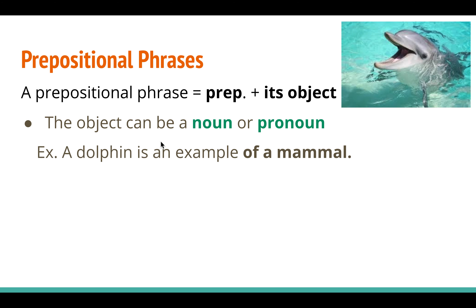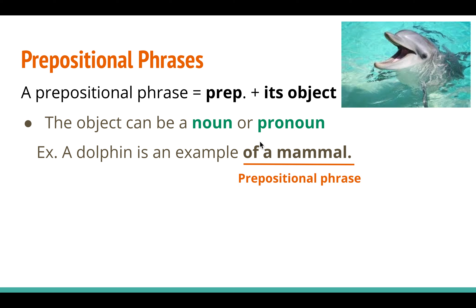Let's look at some examples. This one says, 'A dolphin is an example of a mammal.' The prepositional phrase here is 'of a mammal.' Notice that it begins with the preposition 'of,' and it has an object — a noun — 'a mammal.' That's how we know that it's ended.